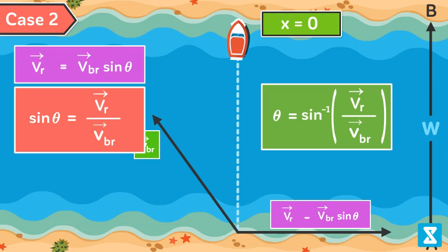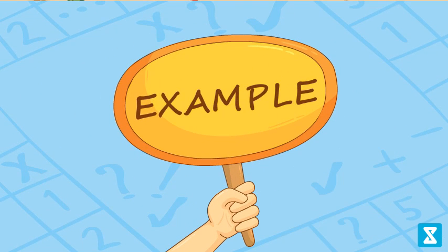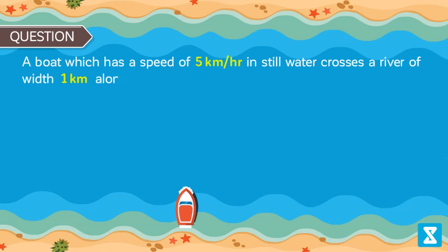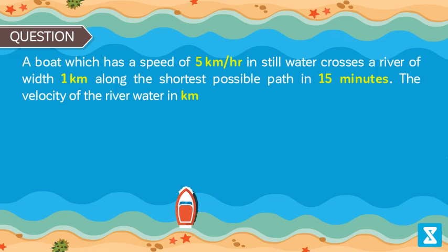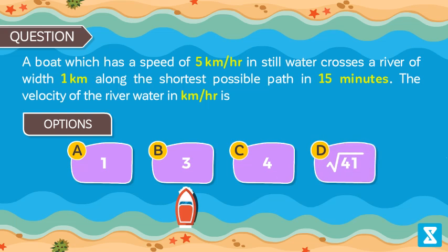Let's solve an example based on riverboat problems. Question: A boat which has a speed of 5 km per hour in still water crosses a river of width 1 km along the shortest possible path in 15 minutes. The velocity of the river water in kilometer per hour is - here the options are 1, 3, 4, square root 41. This question was asked in IIT JEE 1988 exam.